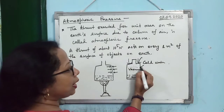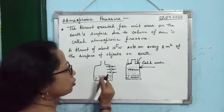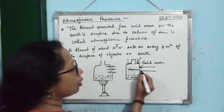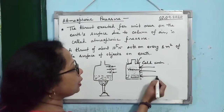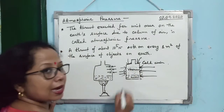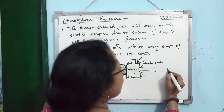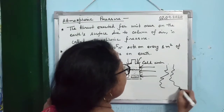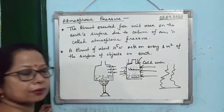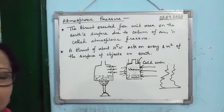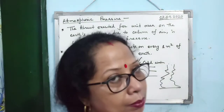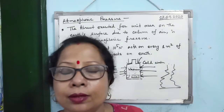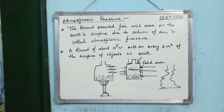With vacuum inside, the internal pressure is gone. Only atmospheric pressure acts from outside. So the tin gets crushed. This crushing of tin experiment proves the existence of atmospheric pressure.